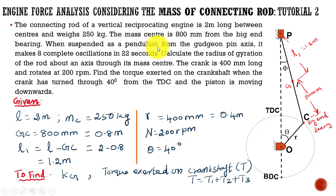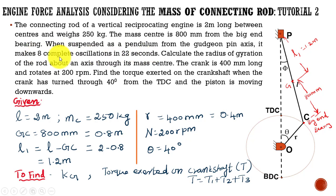The other data given in the problem: when suspended as a pendulum from the gudgeon pin axis, it makes 8 complete oscillations in 22 seconds. Using this data we can calculate the frequency of the connecting rod oscillation, and from that we can calculate the radius of gyration.